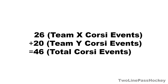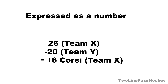Team X's 26 Corsi events plus Team Y's 20 Corsi events equals 46 total Corsi events. Corsi can be expressed as a number: Team X's 26 Corsi events subtracted by Team Y's 20 Corsi events gives Team X a plus 6 Corsi rating.